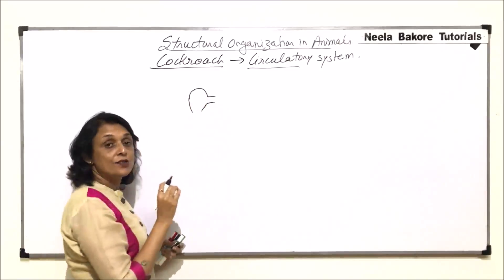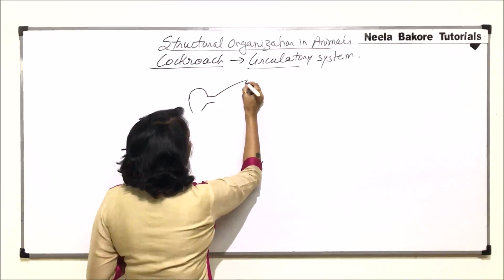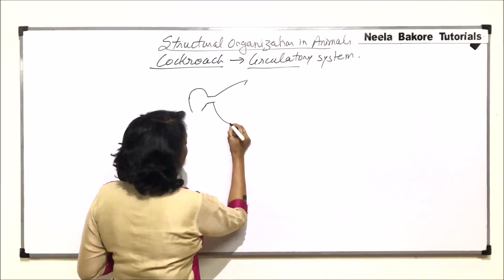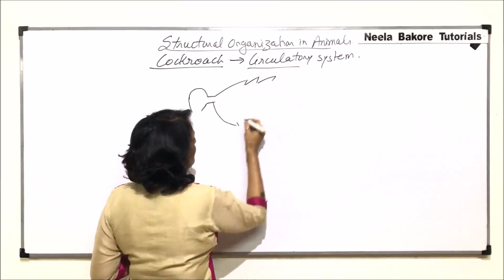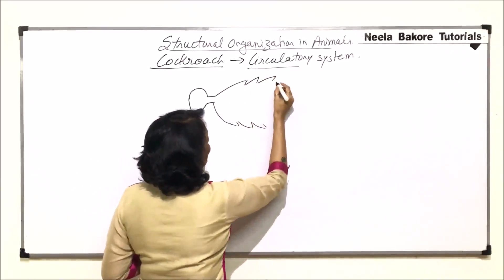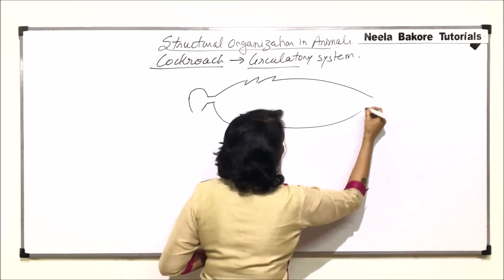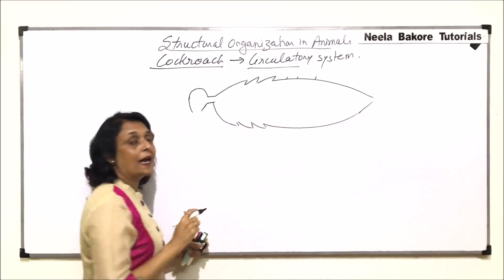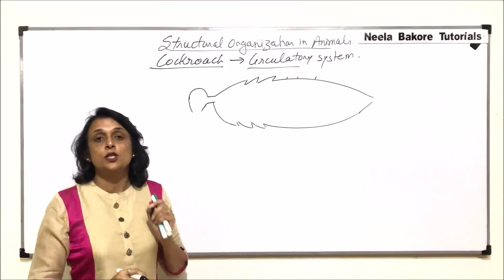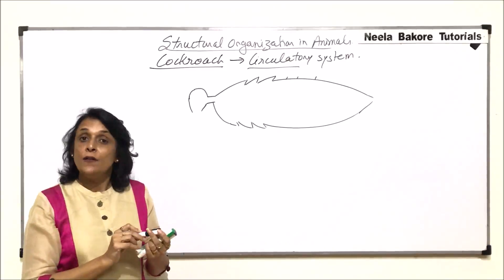So this is the heart, the neck is not so big but we are drawing it big so that we can show all different compartments. So this is prothorax, mesothorax, metathorax and the 10 segmented abdomen. We will not draw the segments, we will just draw the lines so that we know that each chamber of heart lies in one segment of the body.